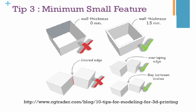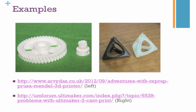Tip number three is to take note of the minimum small features in your model. Different types of printers have different capabilities — a professional printer may handle smaller feature sizes than a home 3D printer. This problem usually appears when somebody designs a model at a very large scale but then scales it down; the features become extremely thin and impossible to print, resulting in a bad print.